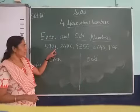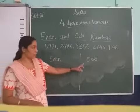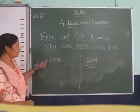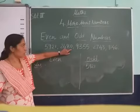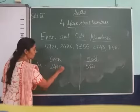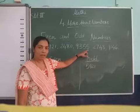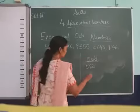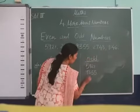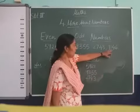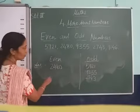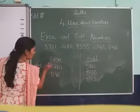Now, on the ones place, if the digit is 1, it comes under odd numbers — so 5, 9, 2, 1 is odd. Next number: ones place is 0, which makes a perfect pair, so it comes under even — 2, 4, 8, 0 is even. Next: ones place is 5, so it is odd — 9, 3, 5, 5 is odd. Next: ones place is 3, again odd — 2, 7, 4, 3 is odd. Last number: ones place is 6, which is even — so 9, 1, 4, 6 goes under even. This is our answer.